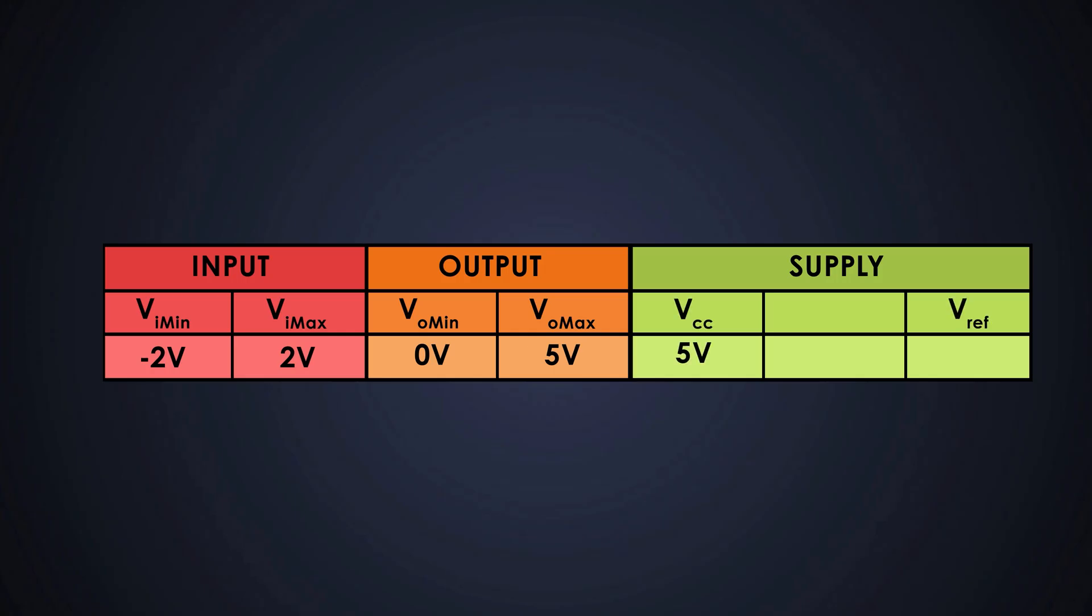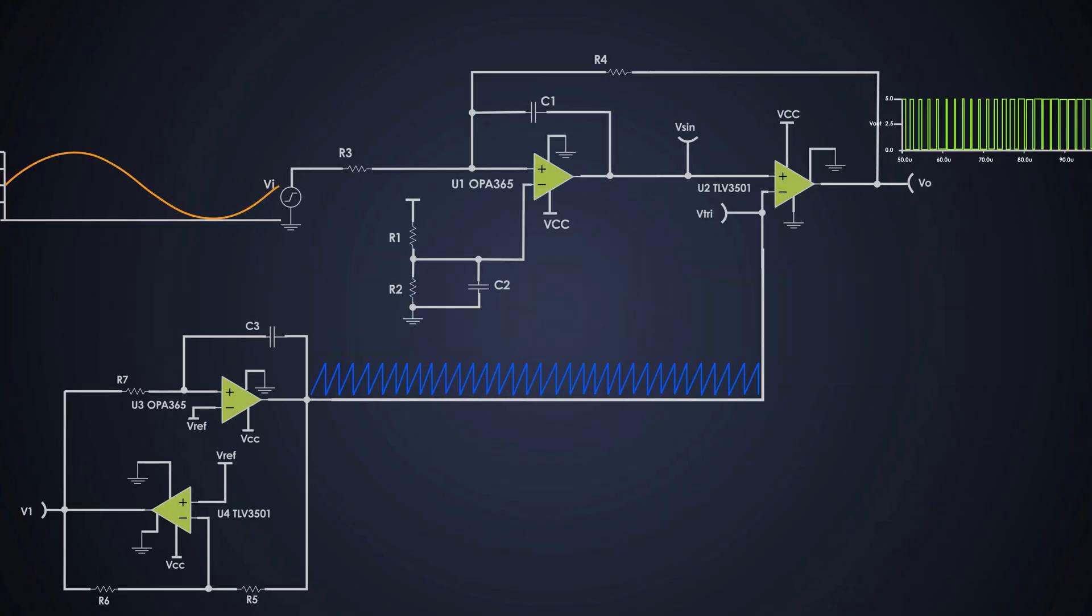And the reference voltage for the comparison purposes is set at around 2.5 volts. This reference is basically the midpoint between 0 and 5 volts, which helps us center everything properly. Now, let's break down this circuit into blocks and go through the design calculations one by one.